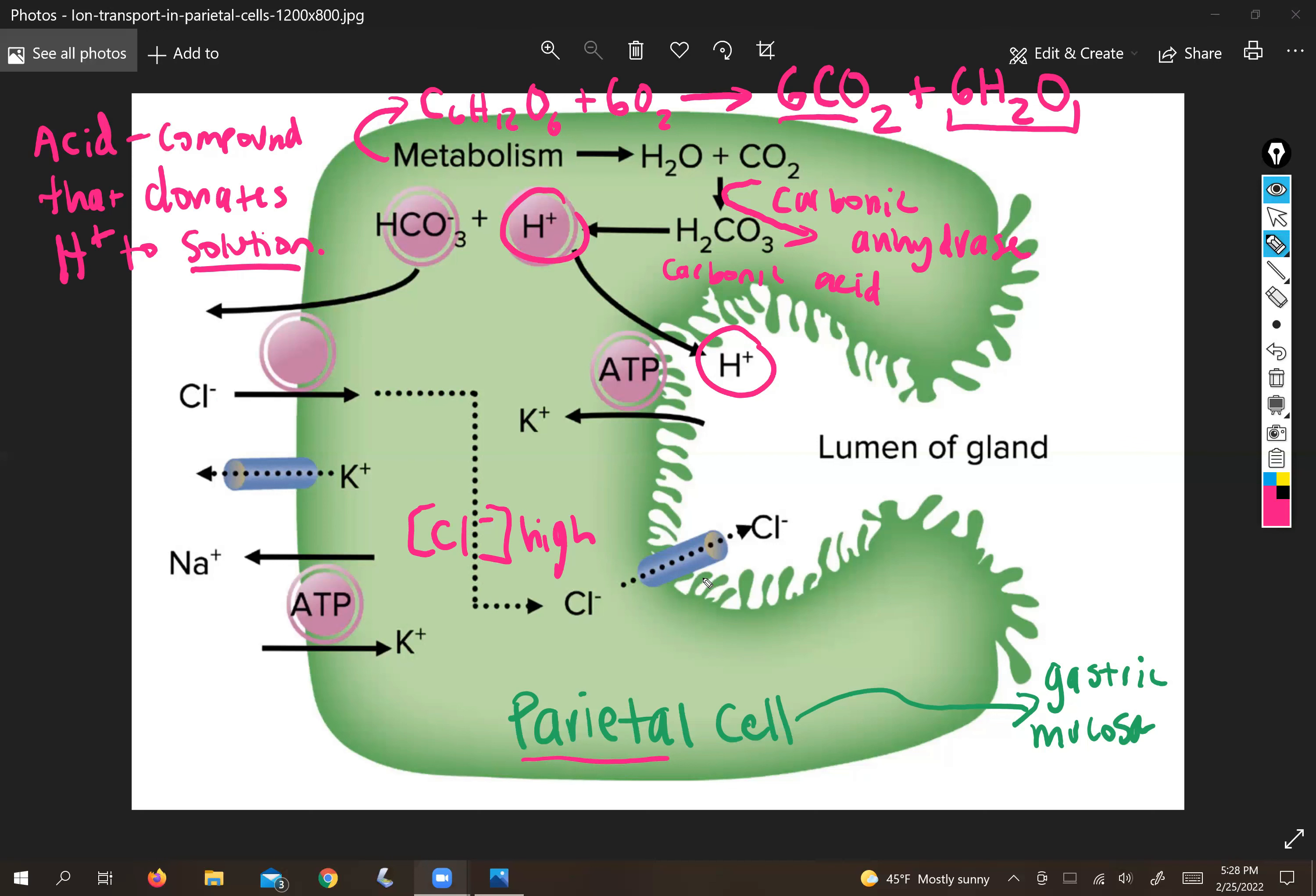So all that's really required for chloride to make it into the lumen is a channel that it can passively flow through. So no ATP required. It's just going through a chloride channel, and there we have our other ingredient for HCl.